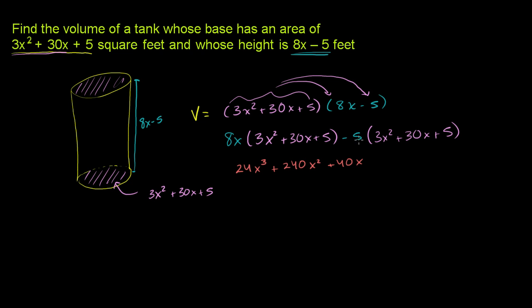And then we multiply this negative 5 out. Negative 5 times 3x squared is negative 15x squared. Negative 5 times 30x is negative 150x. And then negative 5 times 5 is negative 25.